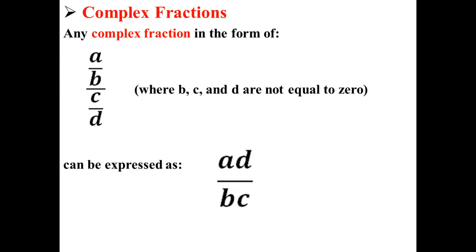Here we have another example. Any complex fraction in the form of a over b all over c over d, where b, c, and d are not equal to zero, can be expressed as ad over bc.